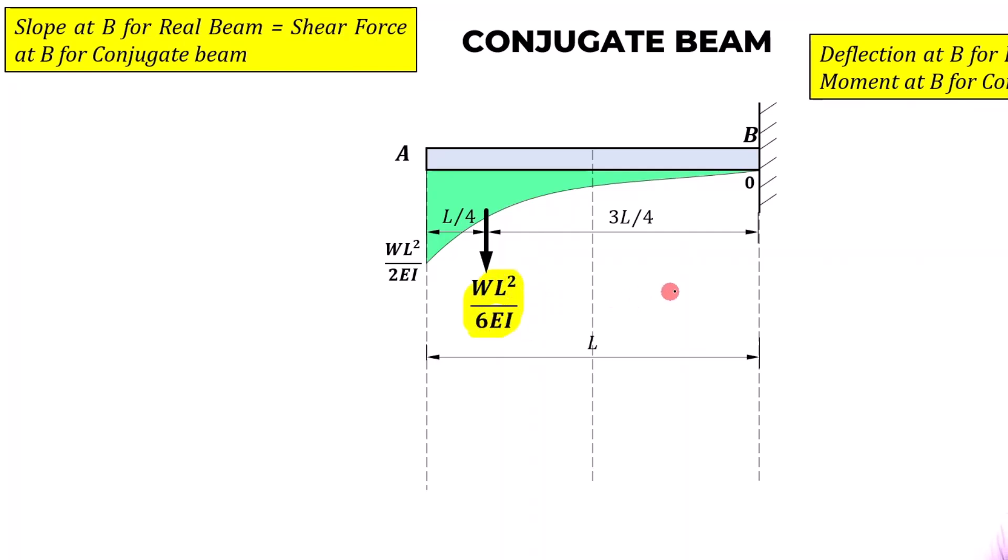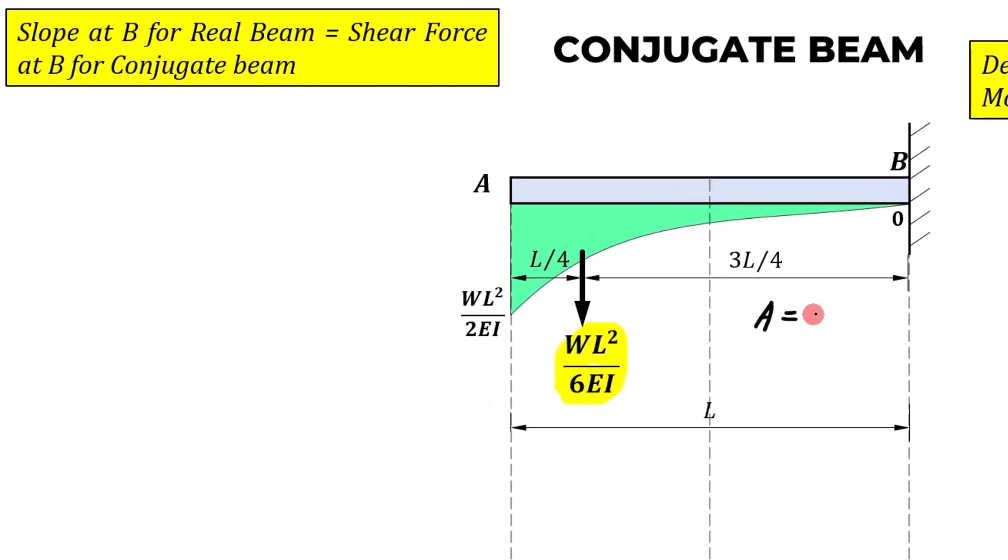wL squared by 6EI. The idea is very simple: the area of this spandrel is going to be one third of base, base is L, into height, which is wL squared by 2EI. This is going to be wL cubed. Let me make this correction: over 6EI. Done. Now let's calculate the shear force.